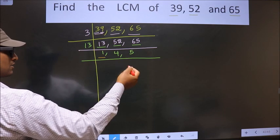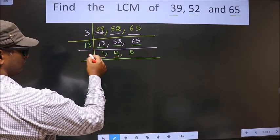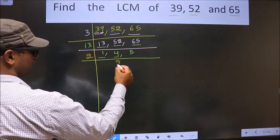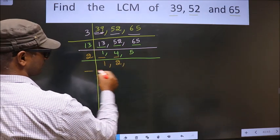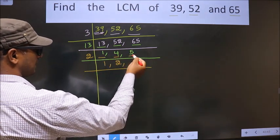So now you focus on the other number, that is 4. 4 is nothing but 2 twos is 4. The other number 5 is not divisible by 2, so you write it down as it is.